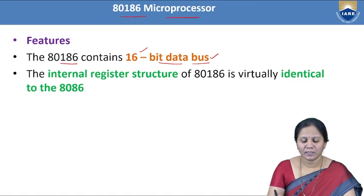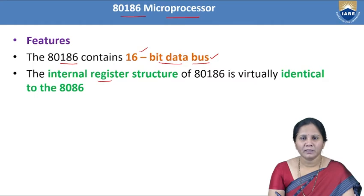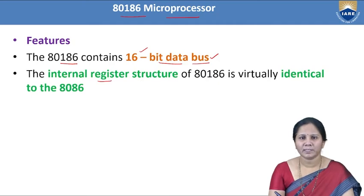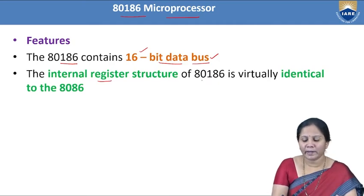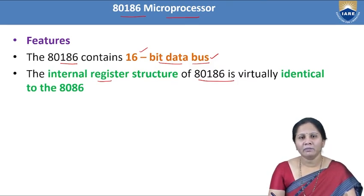The 80186 microprocessor has internal registers. In the 8086 microprocessor, there are 14 registers and each register is 16-bit in size. Similarly, the 80186 microprocessor has the same register organization, and the same registers will be there.